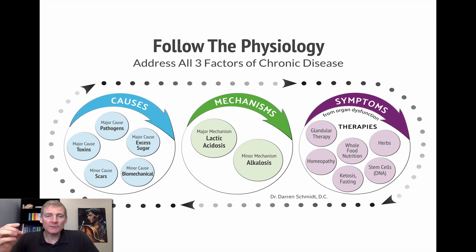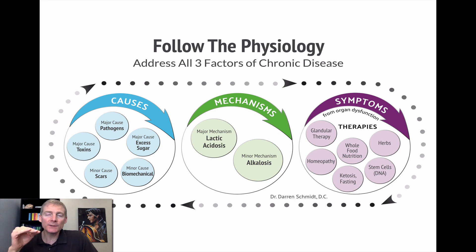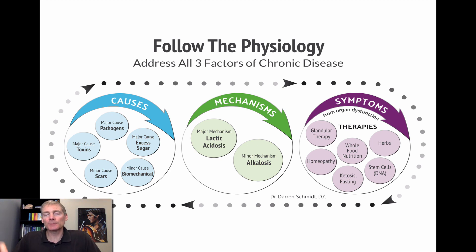This is a graphic I made — it took me six months to figure out with my graphic designer. It says: follow the physiology, address all three factors of chronic disease — causes, mechanisms, symptoms. The three main causes of chronic disease are toxins, pathogens, and excessive sugar metabolism, with two minor ones: scars and biomechanical issues. The two mechanisms are lactic acidosis — the major one by far — and alkalosis, a minor one that's a super easy fix. Symptoms come from organ dysfunction, and the way to help with symptoms is by feeding the organs through therapies like glandular therapy, whole food nutrition, herbs, stem cells/DNA, ketosis, fasting, and homeopathy.